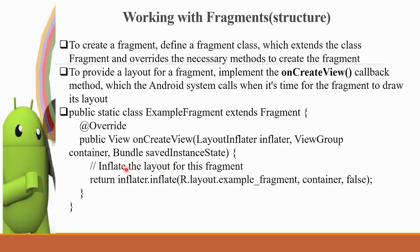In this method we inflate the layout. We return inflater.inflate with three values. The first is the layout resource, for example R.layout.example_fragment, which is the location of the fragment layout. The second is the container. The third is a boolean value indicating whether the fragment is attached to the parent.